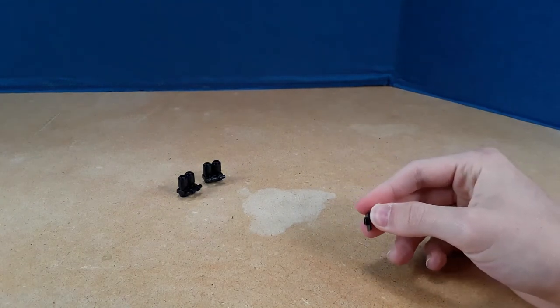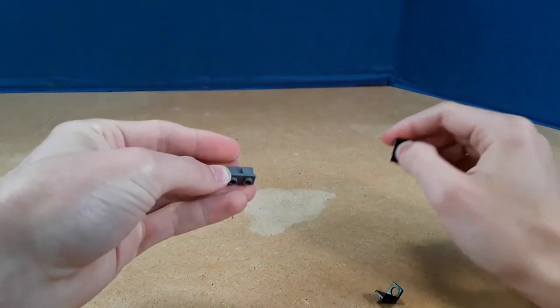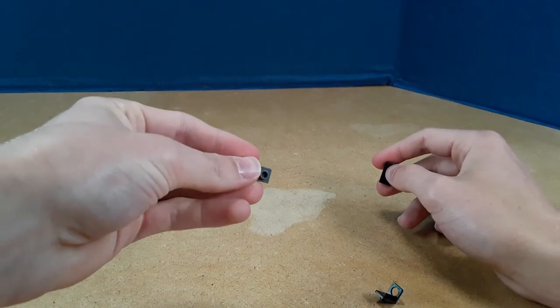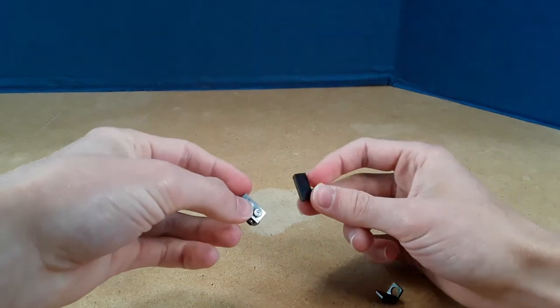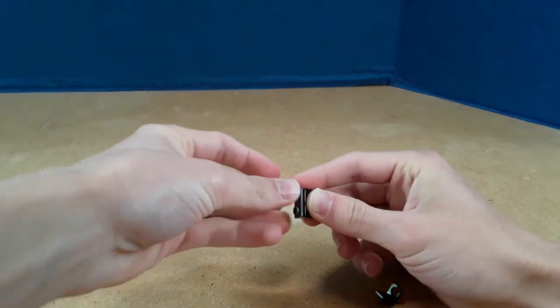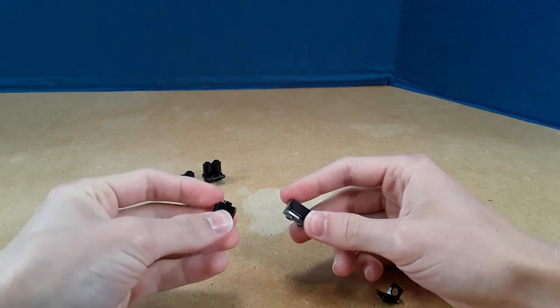But if you want to do it a little fancier, you can take this one-by-two plate with one-by-two studs on the side, take a one-by-two slope and put it on there, take these one-by-one bricks with the studs on the side and put one on each of those gray studs.